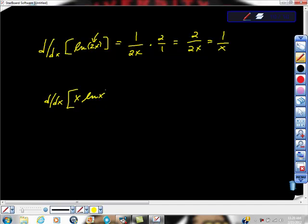x ln of x. This is the product rule, isn't it? So we're just going to apply the product rule here. f of x is x. The first derivative of ln of x is 1 over x, isn't it? Plus g of x, which is ln of x, times the derivative of x, which is 1. So here we get x over x is 1 plus ln of x is our derivative.